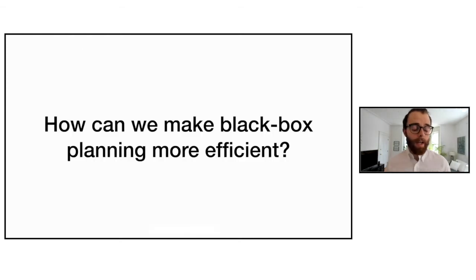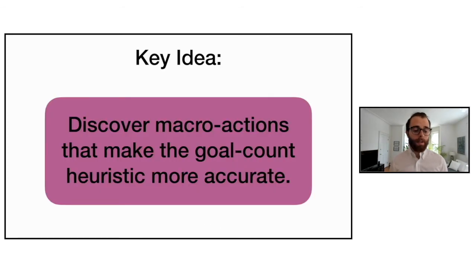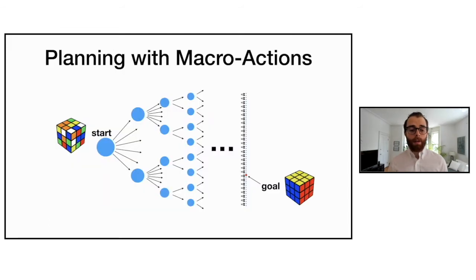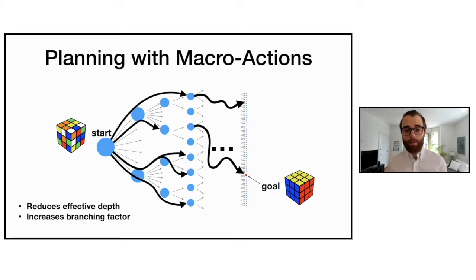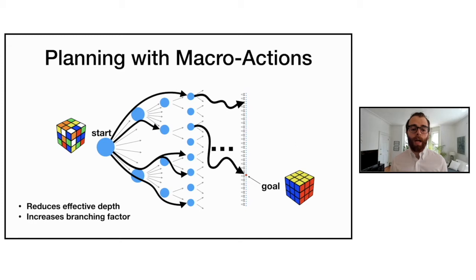The key question is: how can we make black box planning more efficient? The idea explored here is to discover macro actions that make the goal count heuristic more accurate. We add macro actions onto the original actions — each macro action is a deterministic sequence of primitive actions. These macro actions reduce the effective depth of the search tree since we can do multiple steps at once, though the expense is an increased branching factor, so we must add only useful macros.